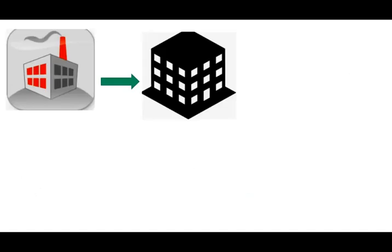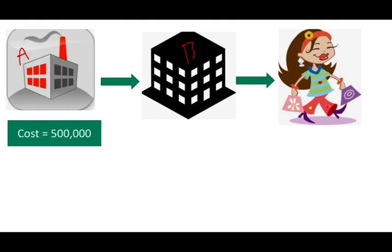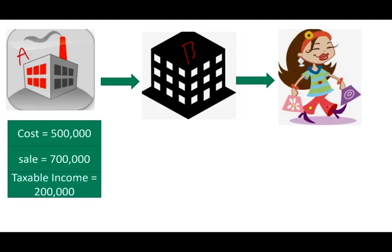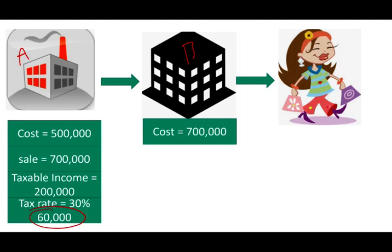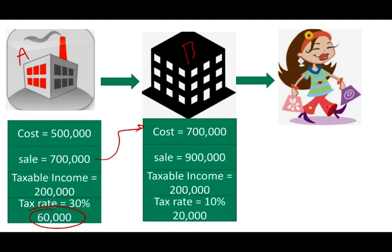We have a manufacturing company, Company A, that sells a product to its subsidiary, Company B, and Company B sells the product to a retailer. They are located in two different countries. Company A manufactured the product at a cost of $500,000, sells it to Company B for $700,000, making a taxable income of $200,000. They pay taxes in that country at a 30% rate, so they pay $60,000 in taxes. Company B gets the product — your sale becomes my cost — sells it for $900,000, has a taxable income of $200,000, and at a 10% tax rate pays $20,000 in taxes.